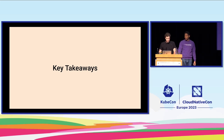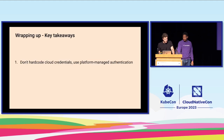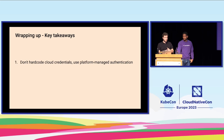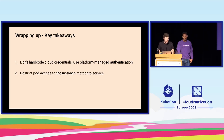Key takeaways: Don't hard-code cloud credentials in workloads. In 2023 there's no good reason to do that — there are mechanisms that work well. You only need temporary credentials managed by your platform that you don't have to worry about leaking. Restrict the access pods have to the metadata service: for AWS and Azure, block it explicitly with a network policy; for GCP, just enable workload identity. When assigning permissions to workloads in the cloud, be mindful because it creates pivot points for attackers.